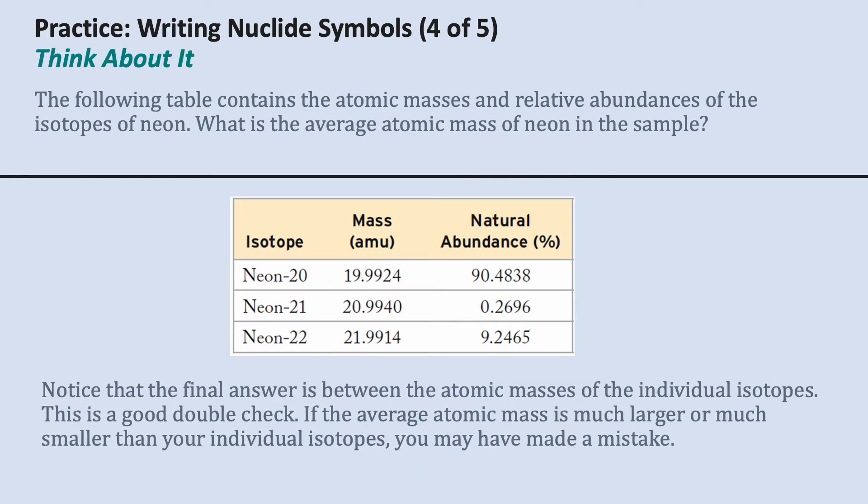Now the question is, does this make sense? The final answer is between the atomic masses of the individual isotopes. It's closest to neon-20,